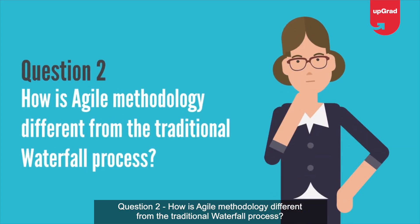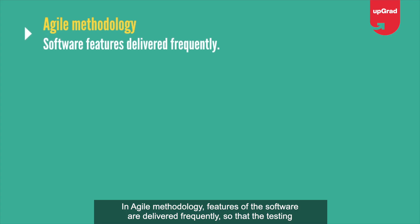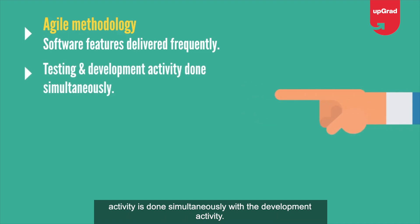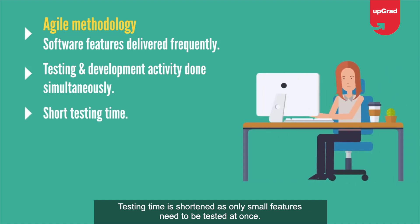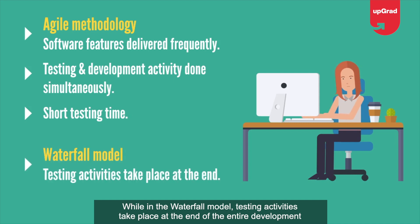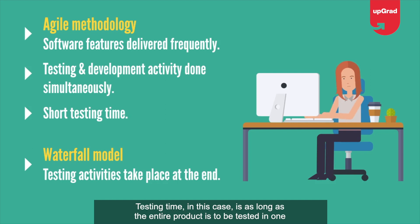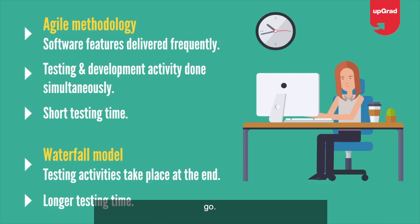Question 2: How is Agile methodology different from the traditional waterfall process? In Agile methodology, features of the software are delivered frequently so that testing activity is done simultaneously with development. Testing time is shortened as only small features need to be tested at once. While in the waterfall model, testing activities take place at the end of the entire development process, as the entire product is tested in one go.